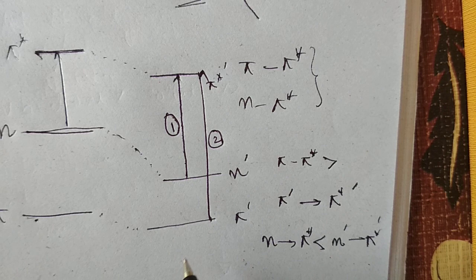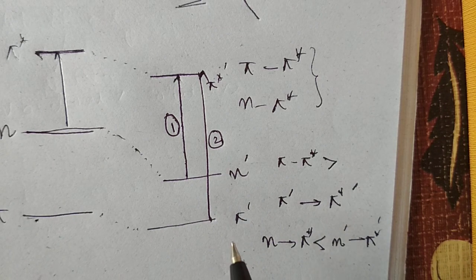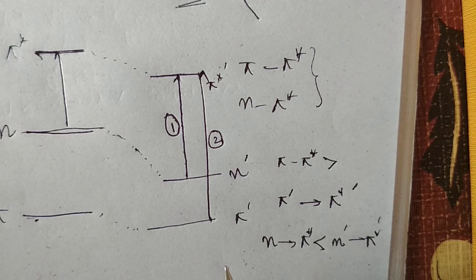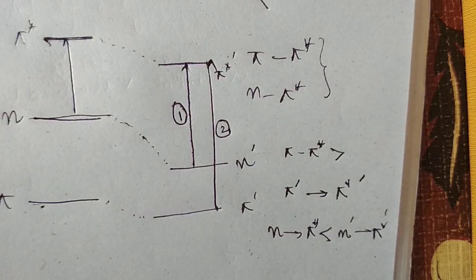That's the solvent effect - that's why the position of the peak changes when you change the polarity of the solvent.